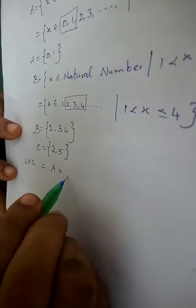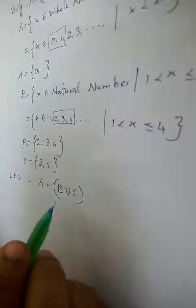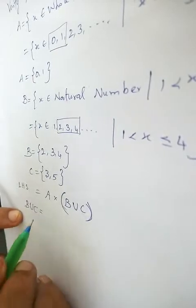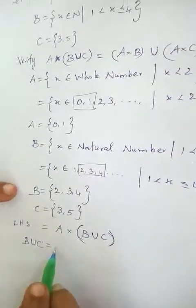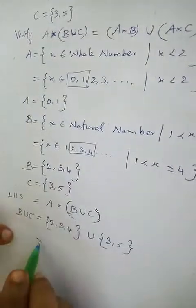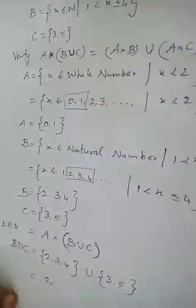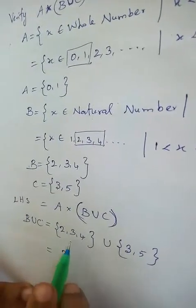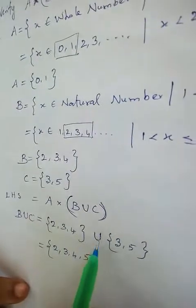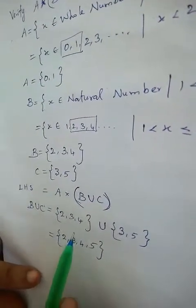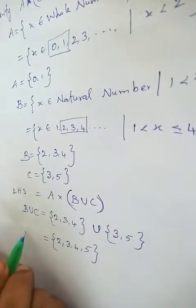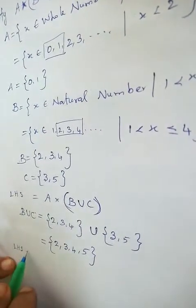For the left hand side, we start with A cross (B union C). Initially we have to find the value in brackets — B union C. Union means writing all the values from both sets together, so we write the value of B union C.